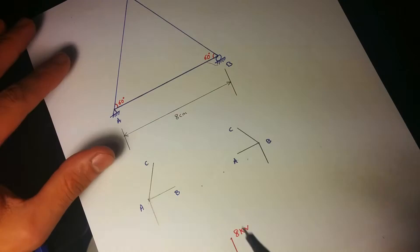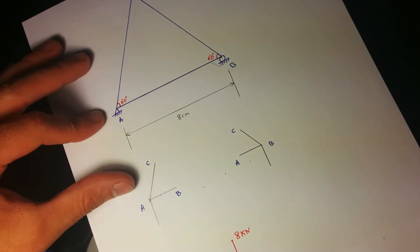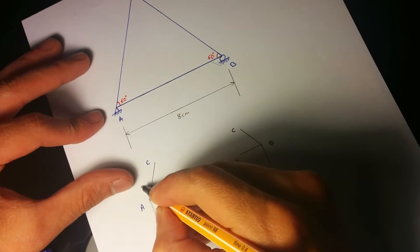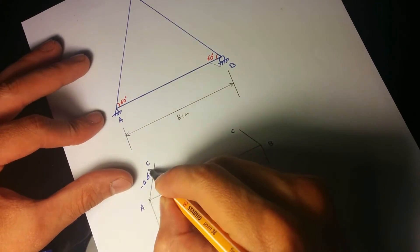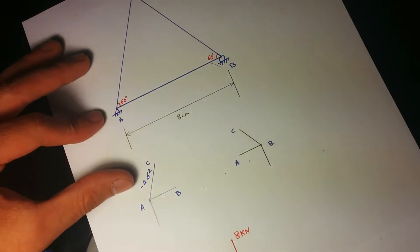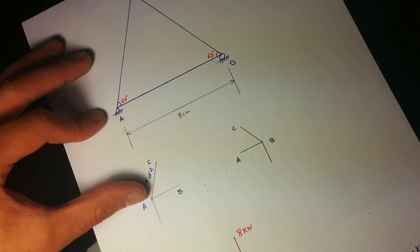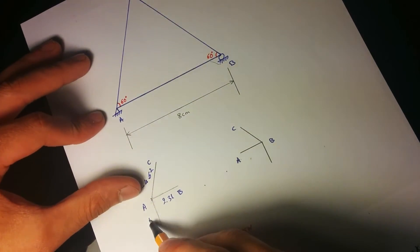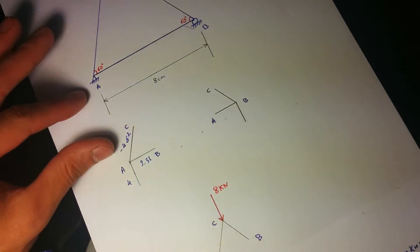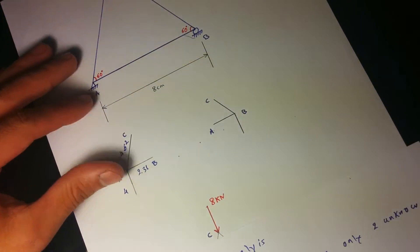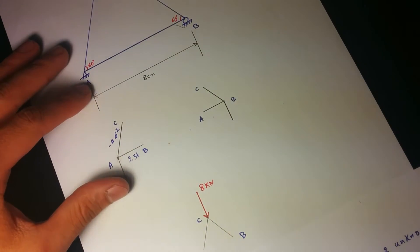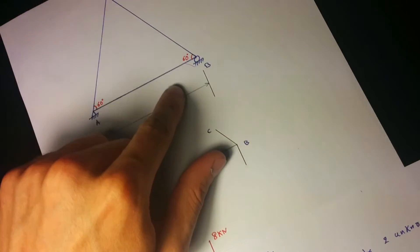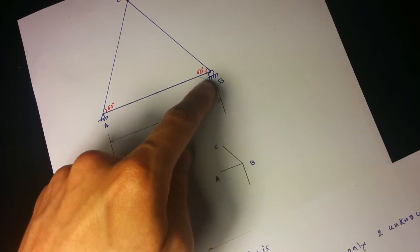So to summarize node A: AC equals minus 4.62 kilonewtons (compression) and AB equals 2.31 kilonewtons (tension). Now we move on and do node B.